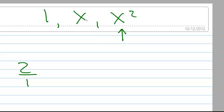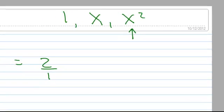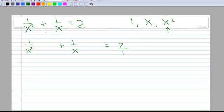But x squared is, if you will, larger than an x, which of course is larger than a 1. So we're going to multiply every term by x squared. So x squared gets multiplied by every term.